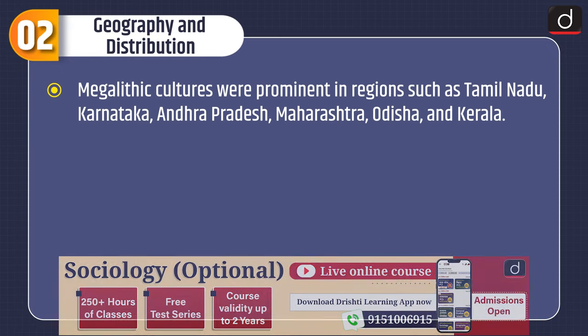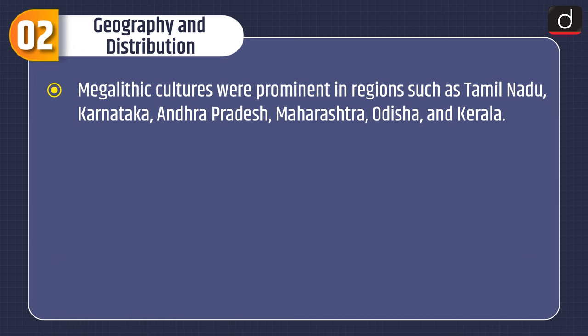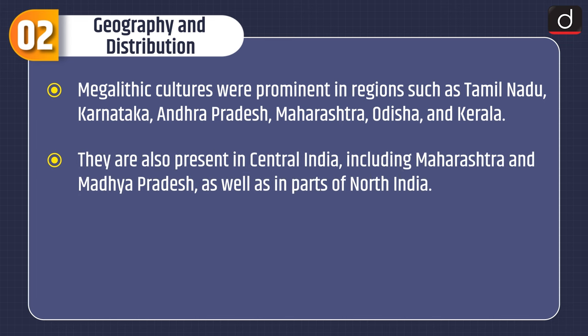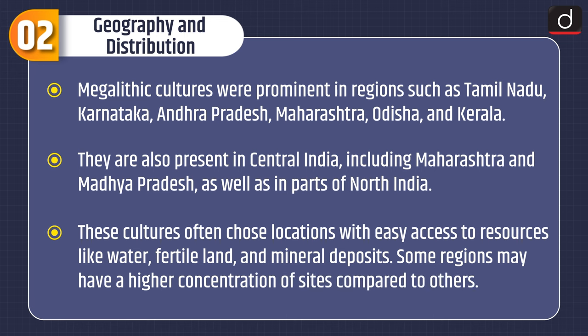Now moving on to its geography and distribution. Megalithic cultures are prominent in regions such as Tamil Nadu, Karnataka, Andhra Pradesh, Maharashtra, Odisha, and Kerala. They are also present in central India, including Maharashtra and Madhya Pradesh, as well as in parts of North India. These cultures often chose locations with easy access to resources like water, fertile land, and mineral deposits. Some regions may have a higher concentration of sites compared to others.